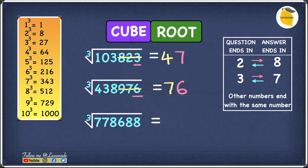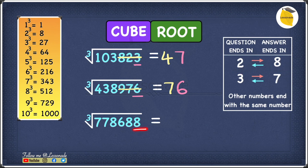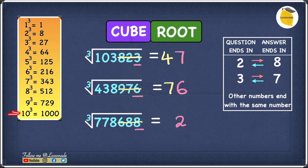Let's move to our final example: cube root of 778688. The last digit is 8, and if the question ends in 8, the answer will end in 2. Cross out the last three digits — 6, 8, 8 — and we're left with 778. The 778 fits between 9 cubed and 10 cubed, between 729 and 1000. Since 9 cubed is smaller than 10 cubed, our answer starts with 9. So our answer is 92.